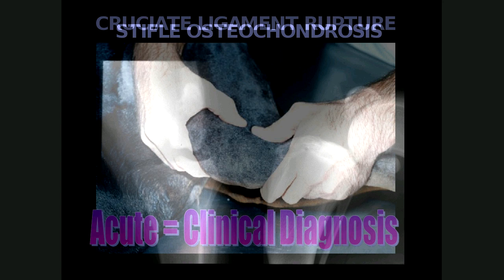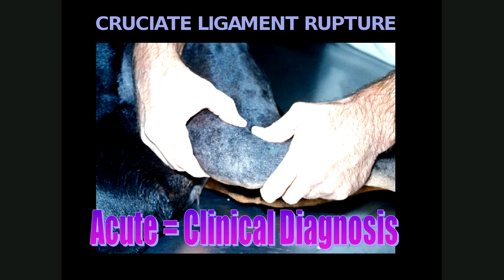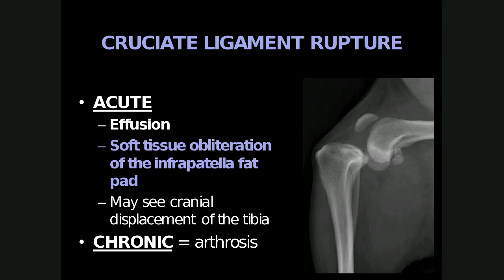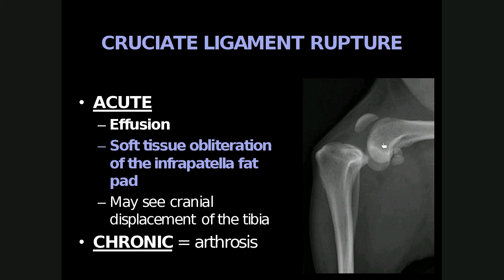Next, we'll look at cranial cruciate ligament rupture. In acute cases, it is a clinical diagnosis and a cranial drawer sign will be present. On radiographs in acute cases, there might be joint effusion — for example, a globulated soft tissue opacity within the joint, resulting in obliteration of the infrapatellar fat pad. In some cases, cranial displacement of the tibia relative to the femur can also be seen.